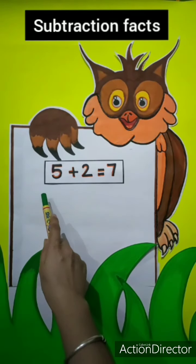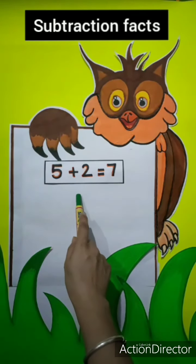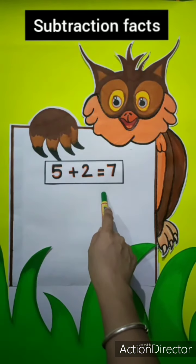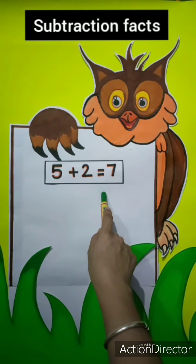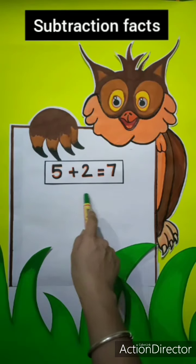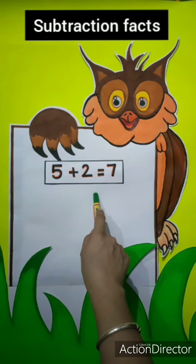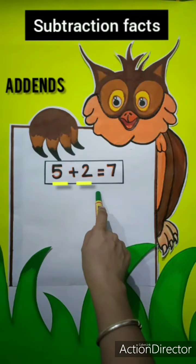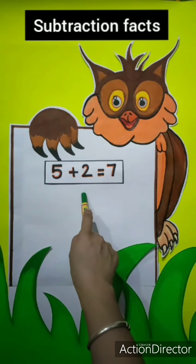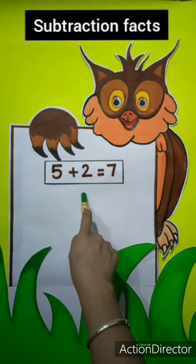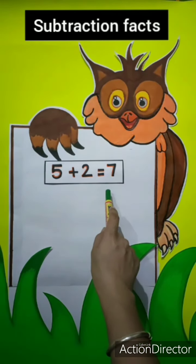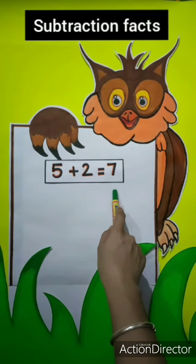To learn the relationship between addition and subtraction, let's first learn to find missing addends using subtraction. Let's take an example. This is 5 plus 2 equals 7. These two numbers are called addends. To find any missing addend, we need to subtract the given addend from the sum. This is called the sum.